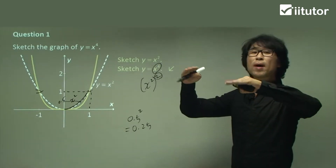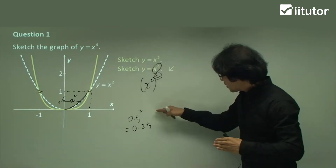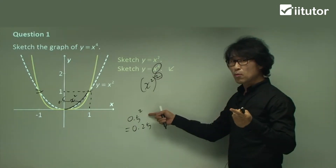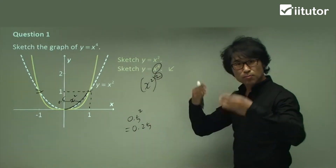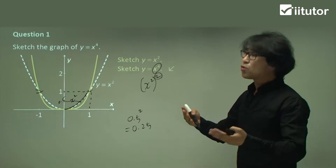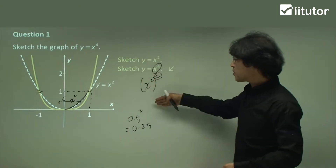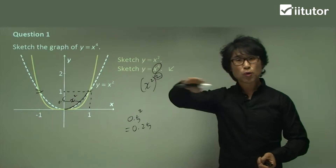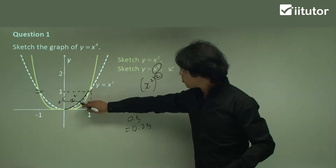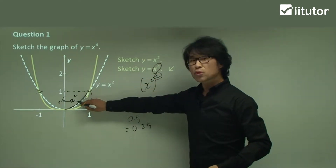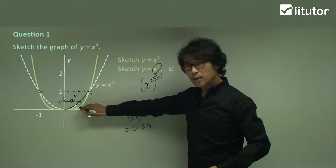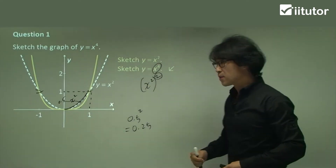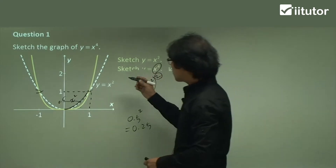The value becomes smaller than its existing value if the number is below 1. If you square a number which is below 1, the value becomes smaller. If you normally square something it gets larger — but this is an exception. The x equals 1 is the border. So if a value is smaller than 1 and you square it, it will be smaller. That's why x to the power of 4 becomes underneath the x squared graph — look at the right-hand side over here.